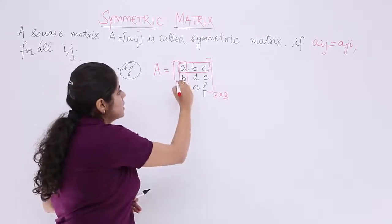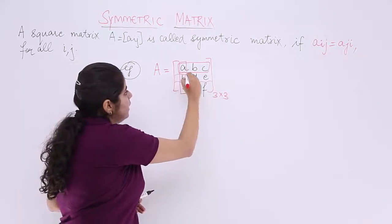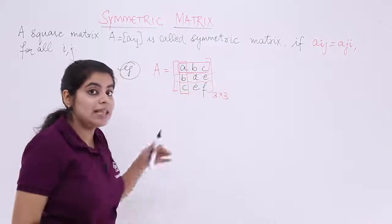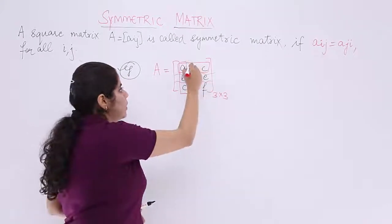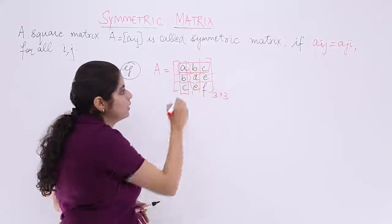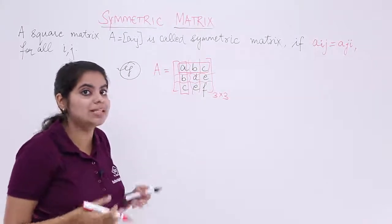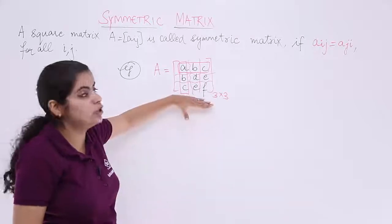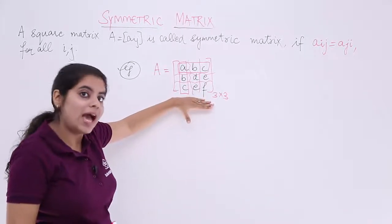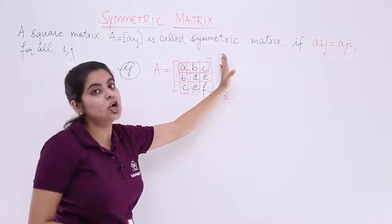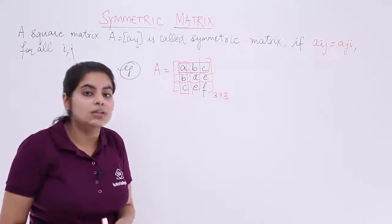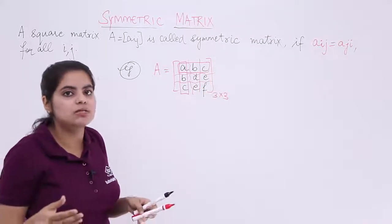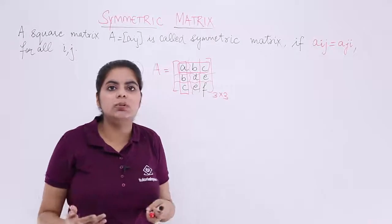Similarly, you see second row which is B, D, E and then second column which is again B, D, E. Even these are same, R2 and C2 are same. Last but not the least, you see the third row which has C, E, F, and that is equal to the last column C, E, F. That means the rows in succession are equal to the columns.